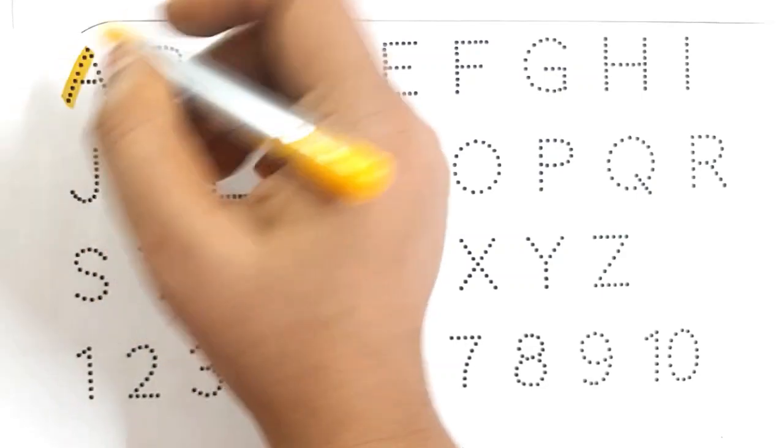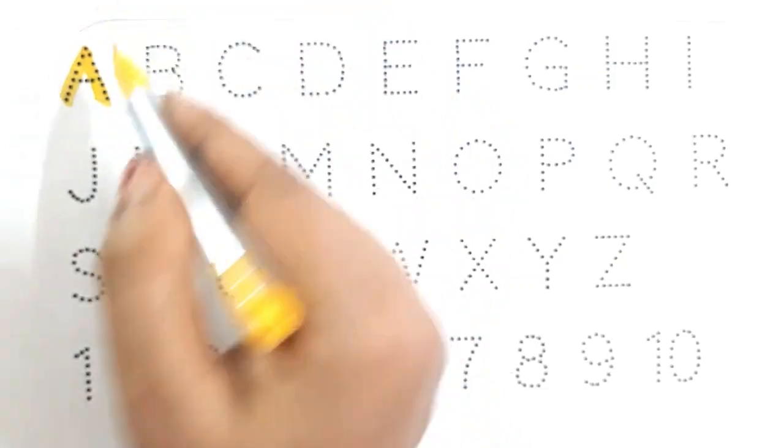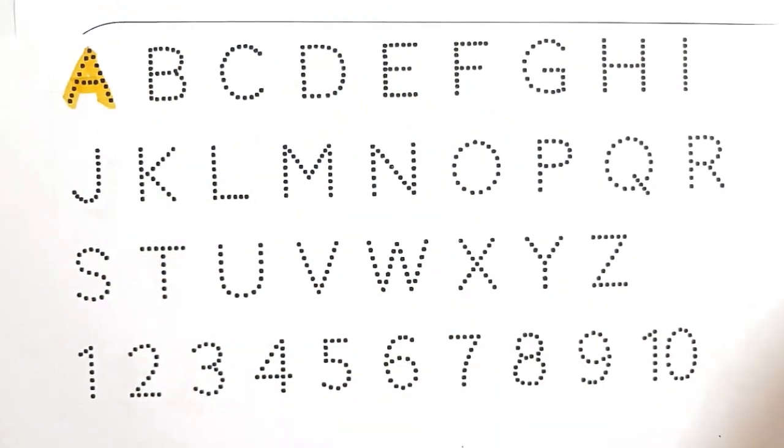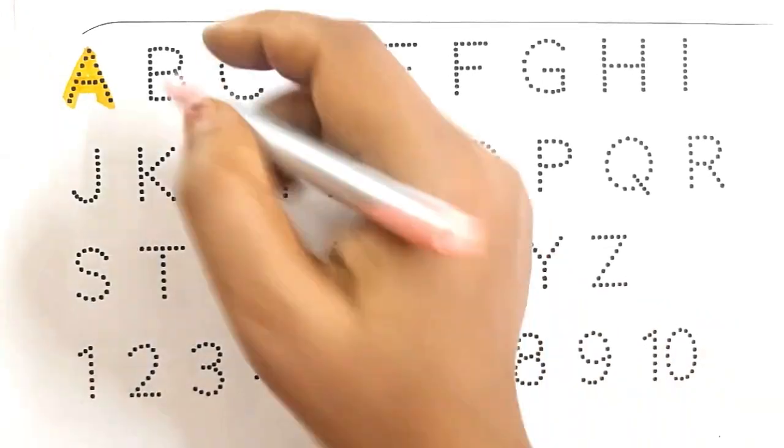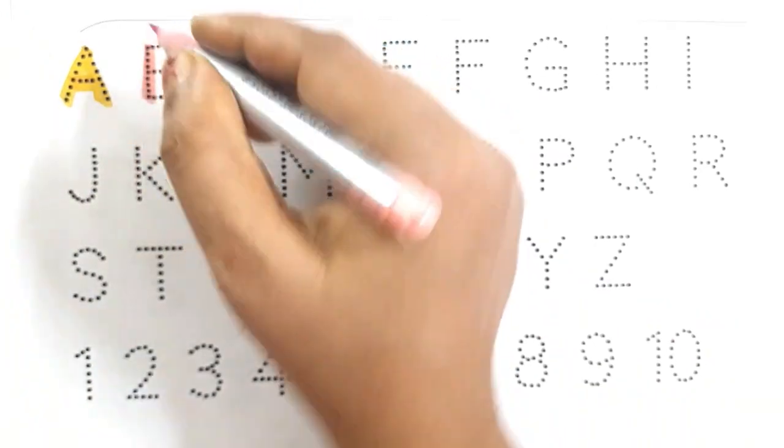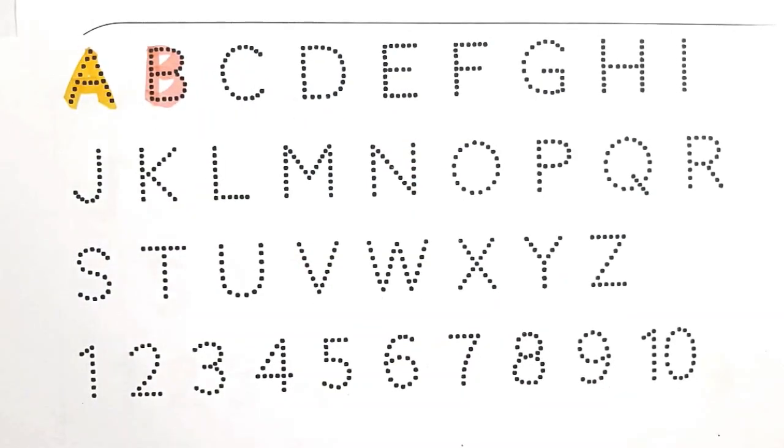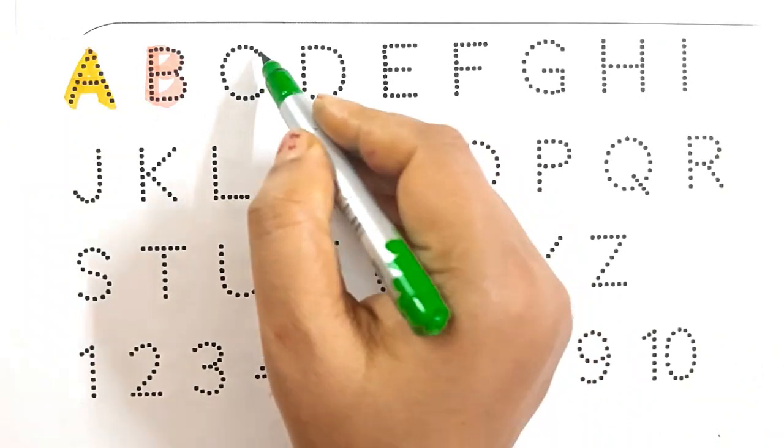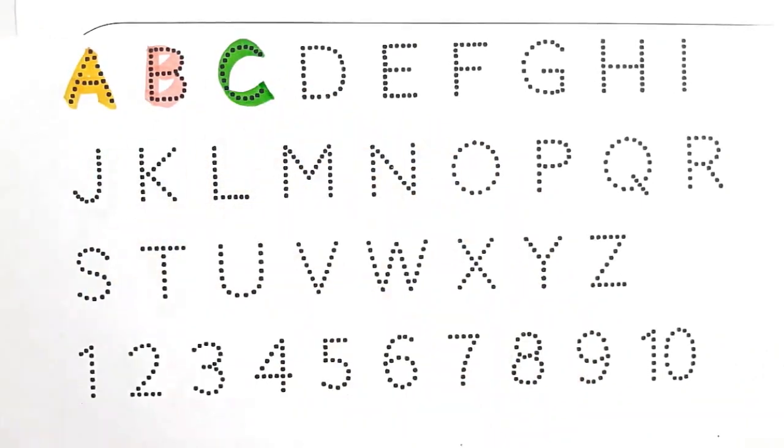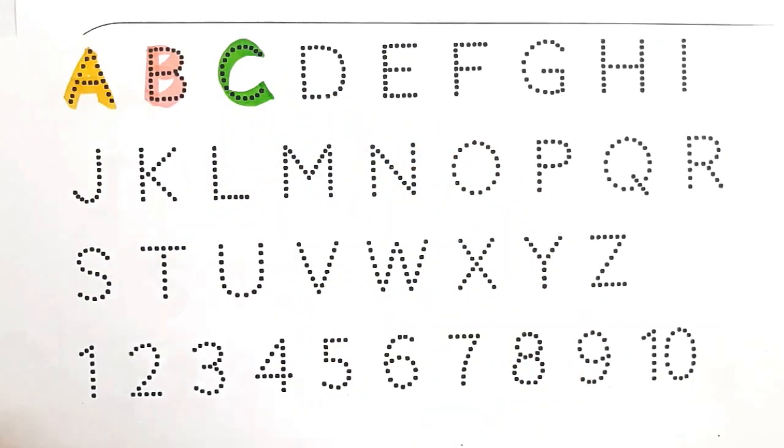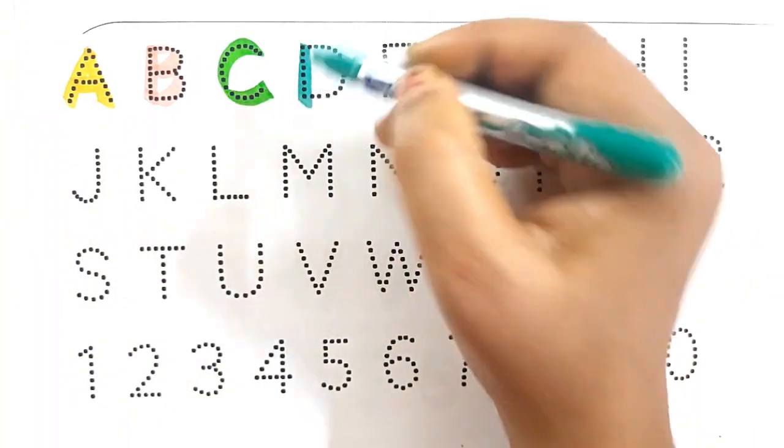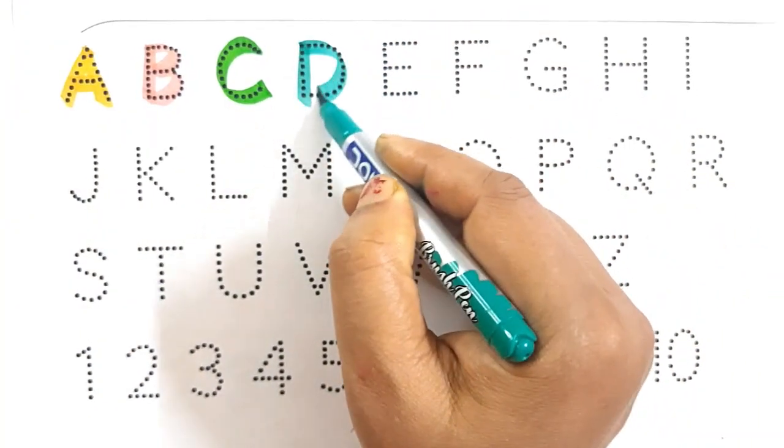A. A for and. B. B for board. C. C for car. D. D for door.